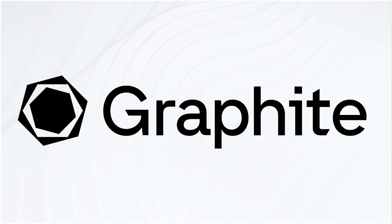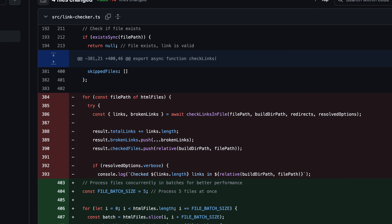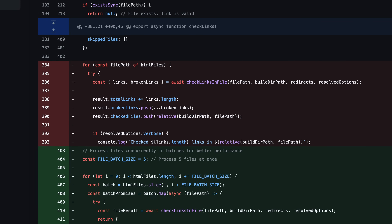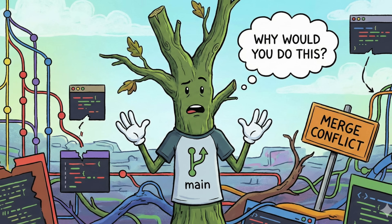This video is sponsored by Graphite — more on them soon. So what are Stacked Diffs? Well, diffs, if you've used version control at all, is simply changes between two versions of code. Stacked Diffs, or Stacked Pull Requests, involves stacking a series of small, dependent changes atop one another.